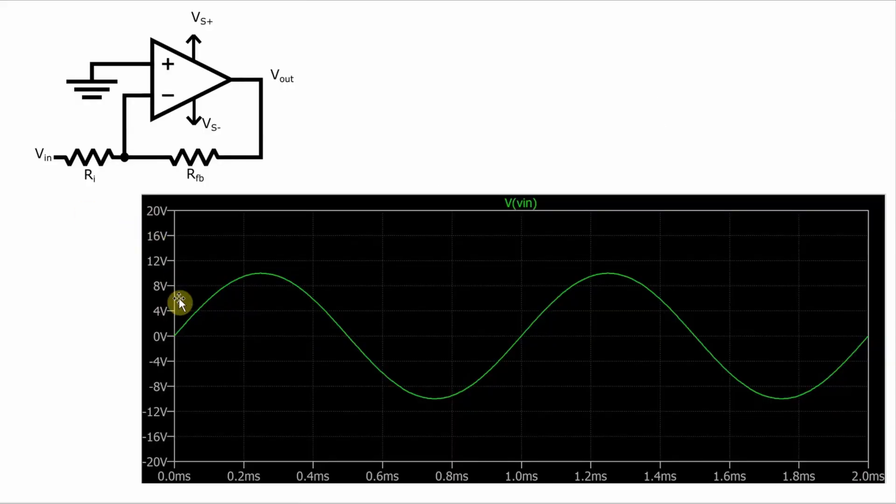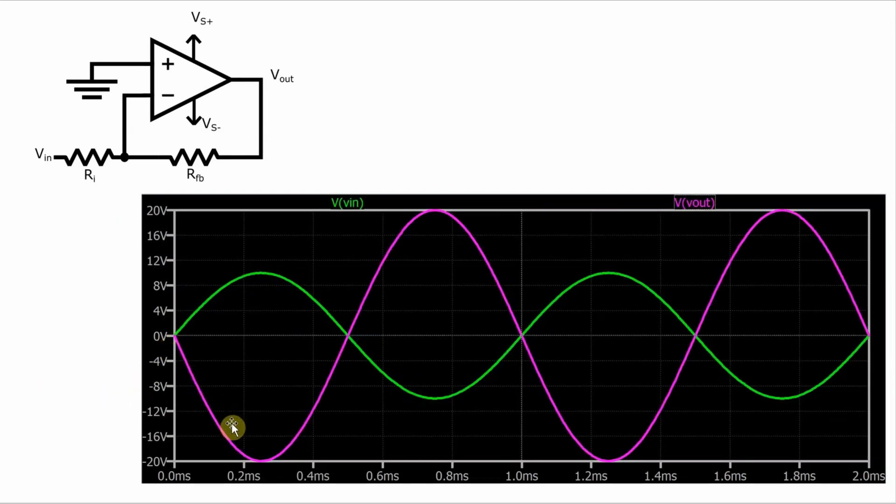When I say 180 degrees out of phase from the input I mean that if the input is a sine wave that looks like this then the output is a sine wave that looks like this. When the input has a positive peak the output has a negative peak and vice versa.